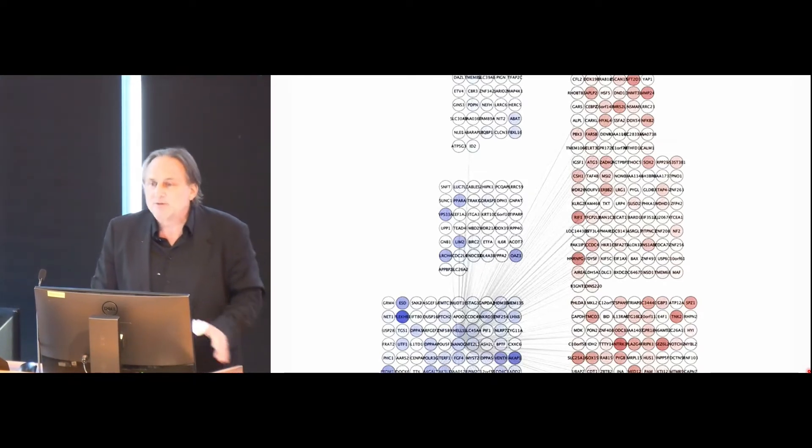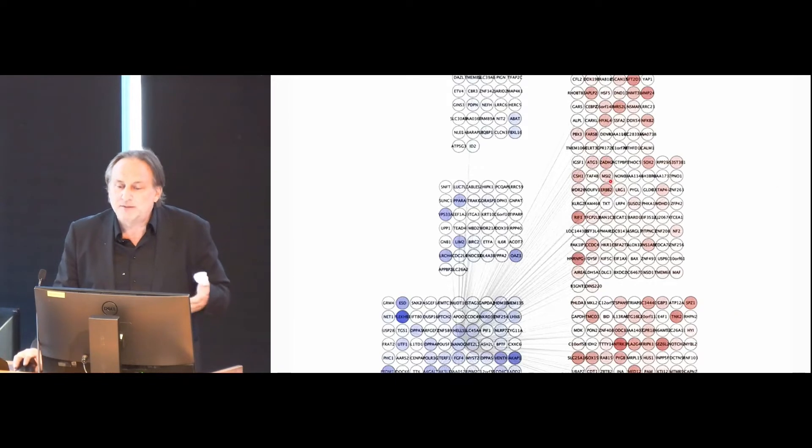As you can see, some of the targets are actually activated by Nanog—they turn slightly red. Some of the targets are repressed by Nanog. And this of course will be very different from the way Nanog would work in a glioma or would work in a blood cancer. So we need to generate these models for every single tissue context.